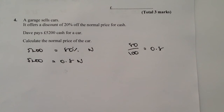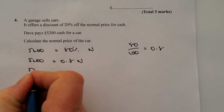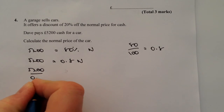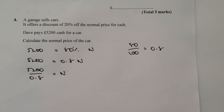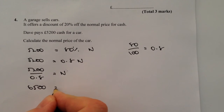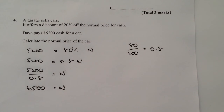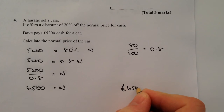So therefore, I can now divide through both sides by 0.8. I end up with 5,200 divided by 0.8 equals N. And if I put that into my calculator, I work out that N equals 6,500, which is the cost of the new car. So in this particular question, the cost of the new car would have been £6,500.